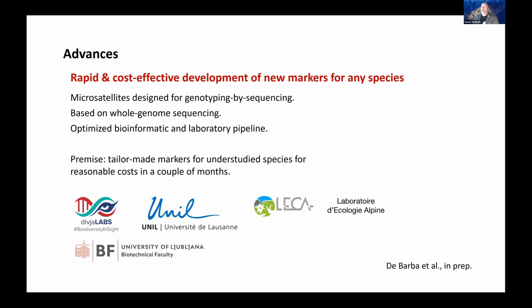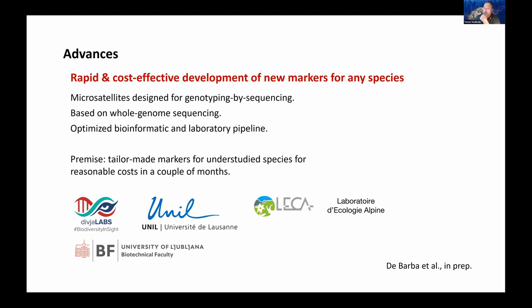One important advance is that we're now able, through the combination of genomics and bioinformatics, to rapidly and cost-effectively develop new markers for basically any species. Not all species are as well studied as wolves or bears. This gives us the possibility to make new markers for any species of conservation interest that would need genetic monitoring.